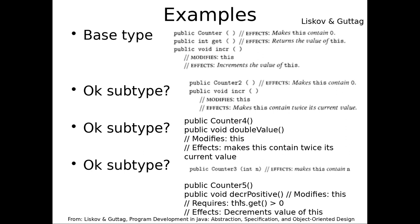How about Counter5, which decrements the value as long as it's greater than zero? Is this a legitimate subtype of Counter? No. It can go down — and someone could be really surprised. If they think they have a Counter, the value was three, and now it's two — what? How could it have changed going downward? It can only increase. Could you say this is not a legitimate Counter? Yes — it violates the basic promise.